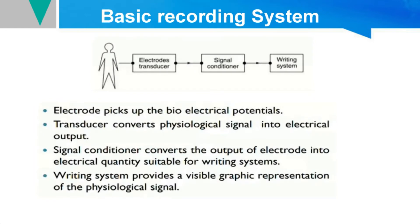The first topic is the recording system. In biomedical instrumentation, measurements are taken from the patient — the patient is the input, and the output is the biological signals such as ECG, EEG, or EMG — any bioelectric signals picked up from the body. From the patient, we place electrodes: microelectrodes, surface electrodes, or needle electrodes, depending on the biological signal being measured. These electrodes pick up the bioelectrical signals from the patient.